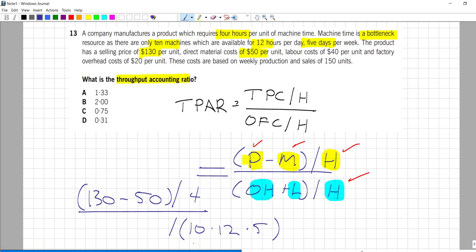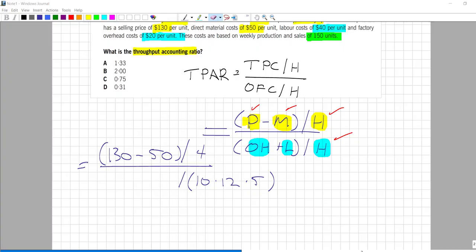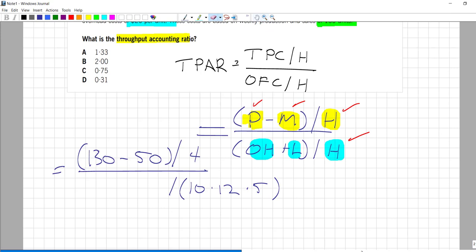Now the tricky part: labor is $40 per unit, overheads are $20 per unit. So we have an overhead absorption rate there. These costs are based on weekly production and sales of 150 units. So the last thing to do: we have 150 weekly units multiplied by a $40 per unit overhead absorption rate and $20 per unit direct labor costs. So there we build up the weekly other factory costs. Plug those into your trusty calculator. You will get 1.33. Answer is A.